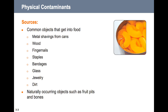Previously in chapter two, you watched the chapter two contaminant video from the National Restaurant Association, which discussed not only biological contaminants, but also physical contaminants and chemical contaminants. Physical contaminants include, but are not limited to, common objects that get into food, including metal shavings from cans and wood and fingernails.